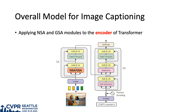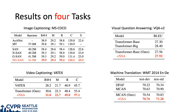To build our image captioning model, we apply NSA and GSA modules to the encoder of the transformer. Our methods bring solid improvements on four tasks.